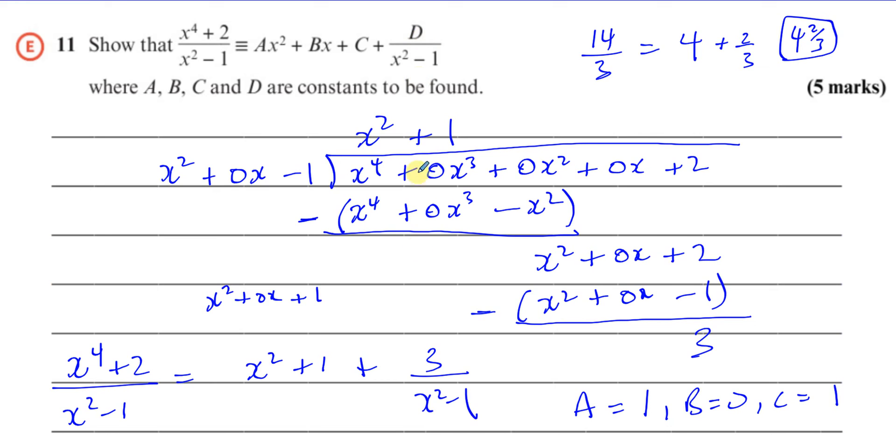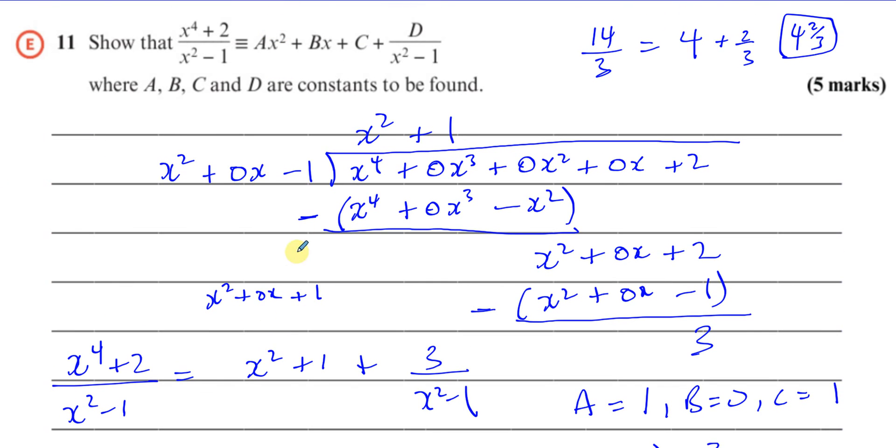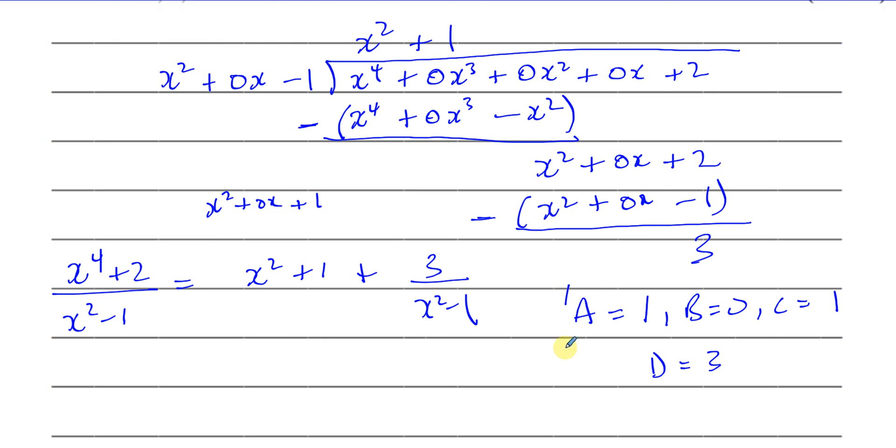And then d is equal to 3. That's a, b, c, and d. d is equal to 3. So a is equal to 1, because you've got 1x squared. b is equal to 0 because you have 0x. c is equal to 1 because you've got 1 here. And d is equal to 3. So we have the answers over here. That's the answer for this question, a, b, c, and d.